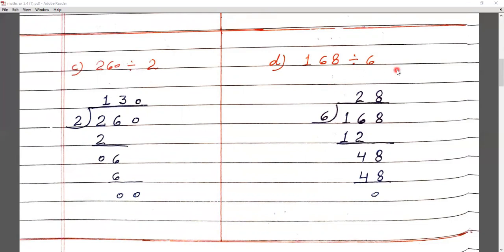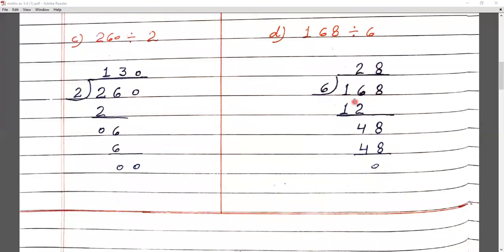Question number D: 168 divided by 6. First digit 1 is smaller than 6, so we make a pair: 16. In the 6 times table, 6 twos are 12. 16 minus 12 is 4. Next digit is 8, we bring it down to make 48. In the 6 times table, 6 eights are 48. 48 minus 48 is 0. The answer to 168 divided by 6 is 28.